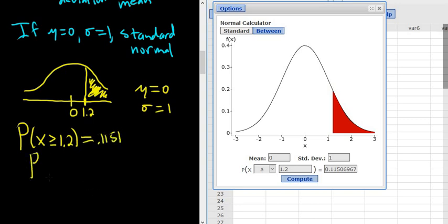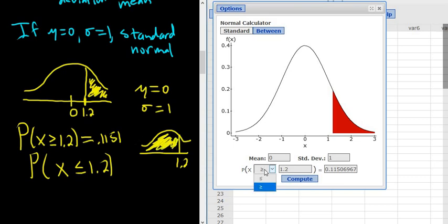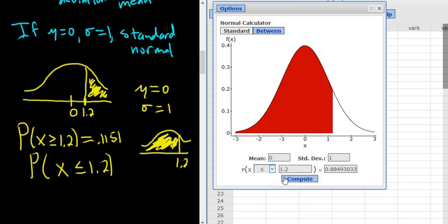If instead you were to ask a question like what's the probability that x is less than or equal to 1.2. In this case it would be the same picture except it would be shaded to the left. So whenever it's less than you shade to the left. Greater than shade to the right. So all you would do is flip the inequality sign here. And boom. There it is. 0.8849.